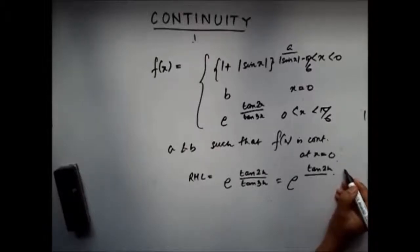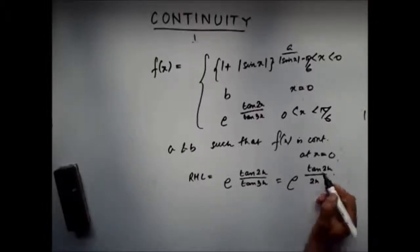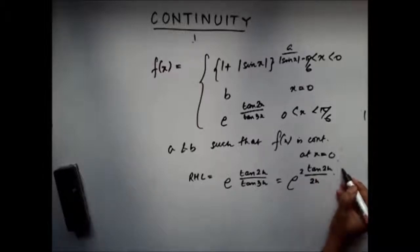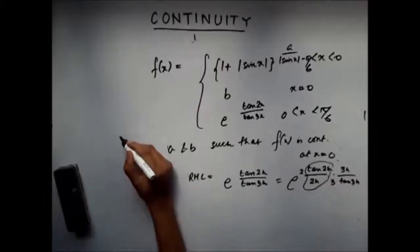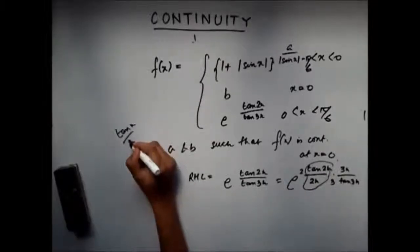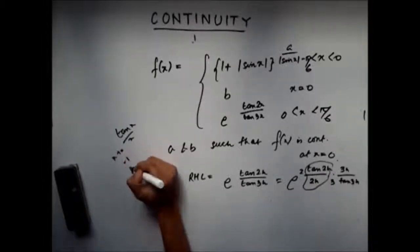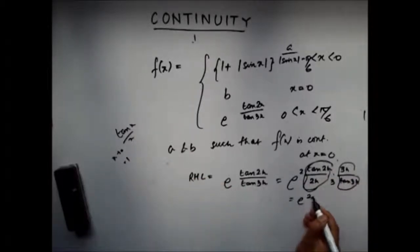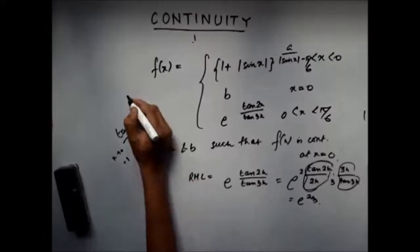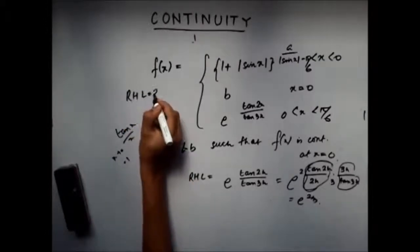I did this so that you know that tan x / x as x approaches 0 is 1. So this is 1, this is 1, this is 1. I am left with e^(2/3). So the right-hand limit is equal to e^(2/3).